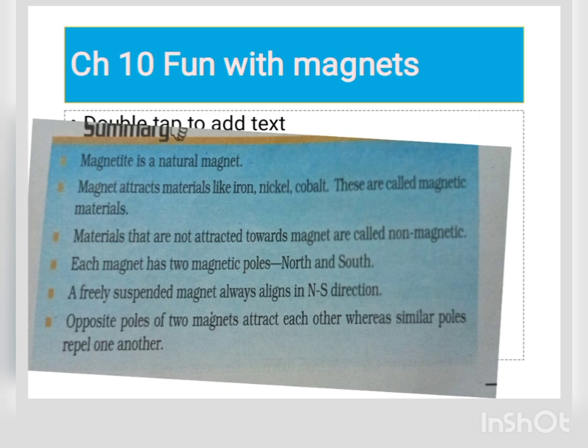A freely suspended magnet always aligns in the north-south direction. Take a string, tie it to a magnet, and hang it freely. What will you see? The magnet will align in the north-south direction. A freely suspended magnet always indicates north and south direction.